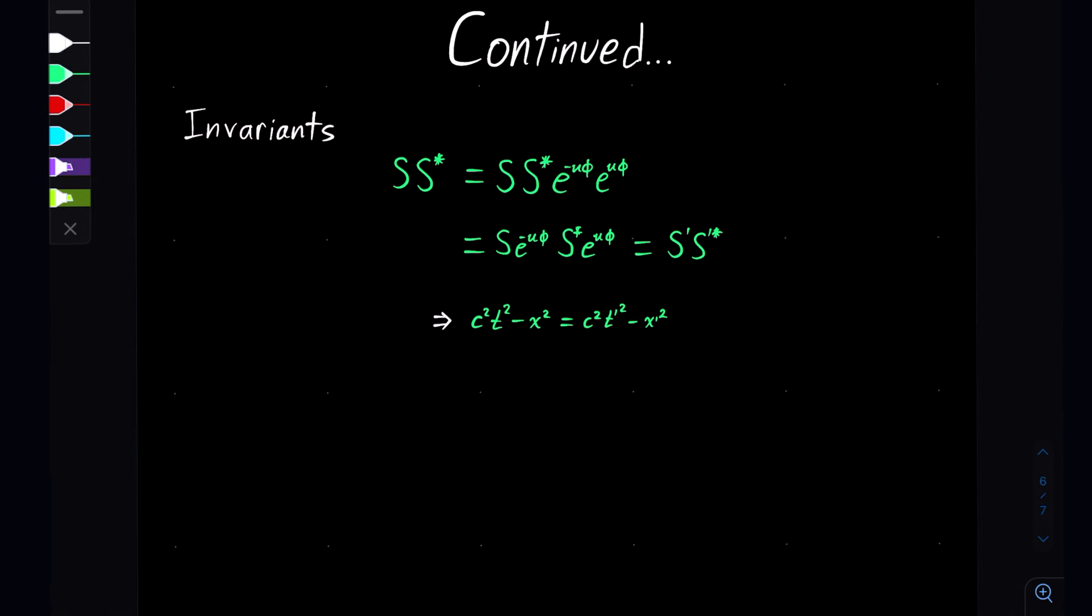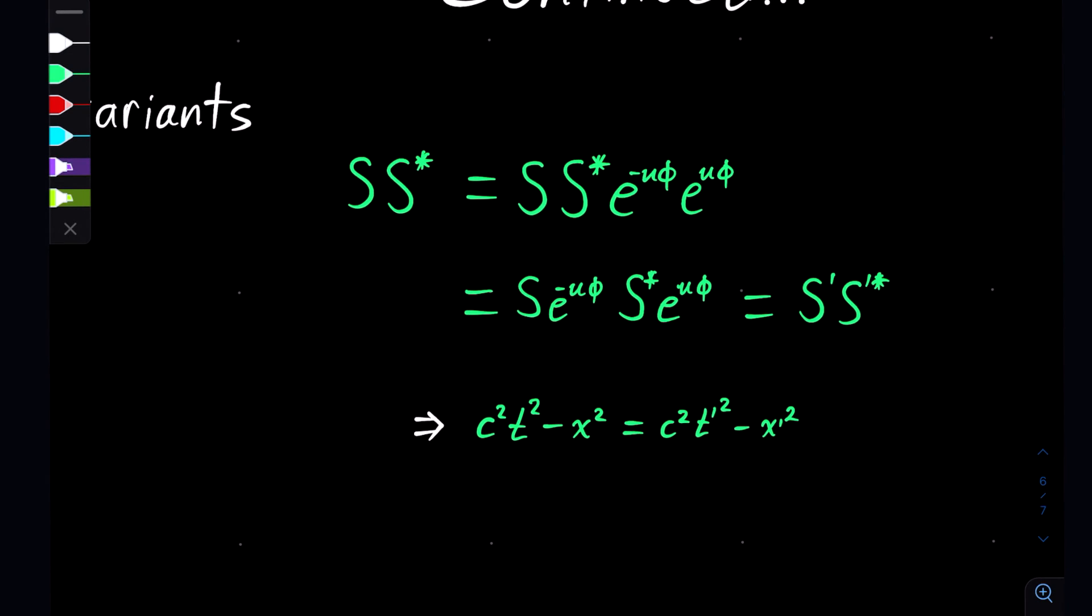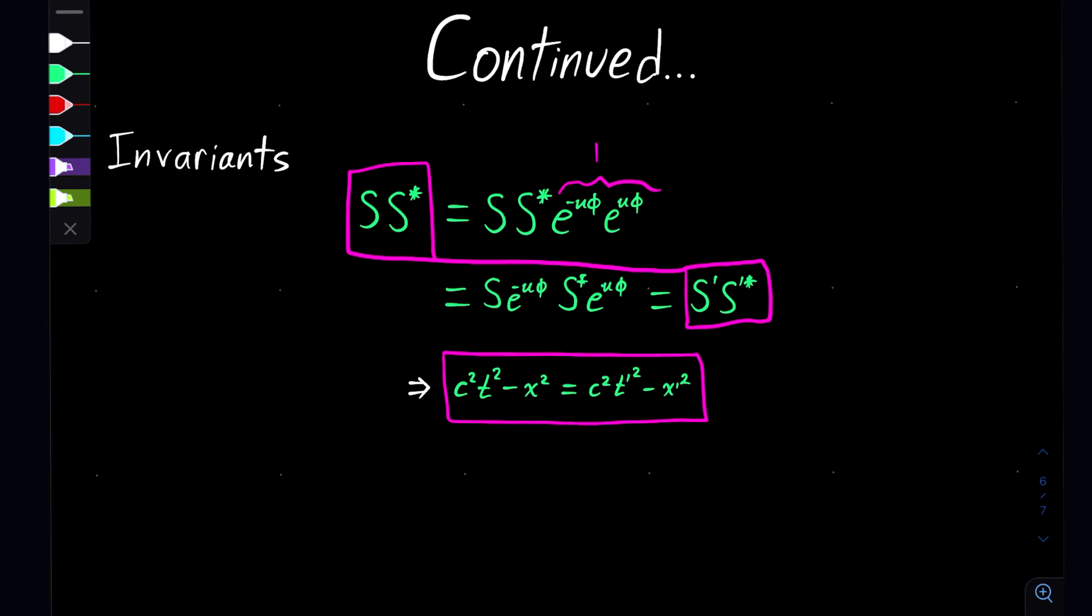This allows us to actually look at invariants, where if we take S times its conjugate and we just multiply it by 1, because this value right here is 1, we can rearrange such that we actually get that these two things here are equal, which means that there is an invariant between these two coordinate systems.